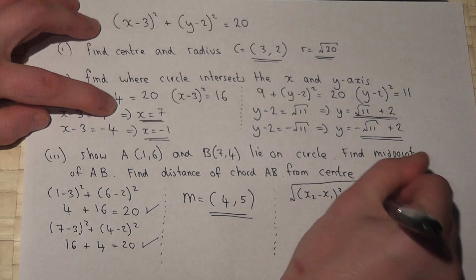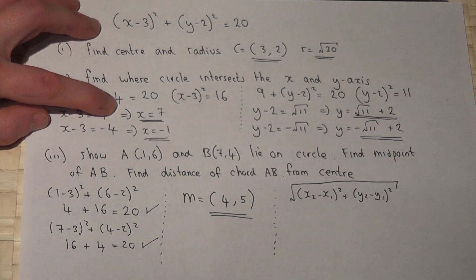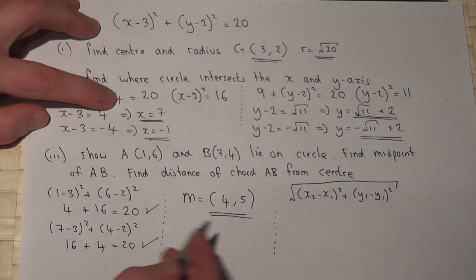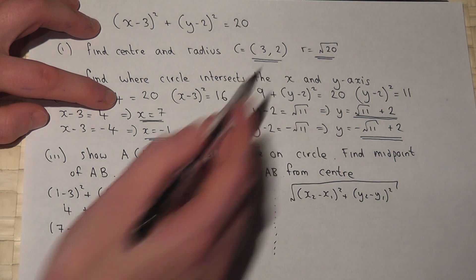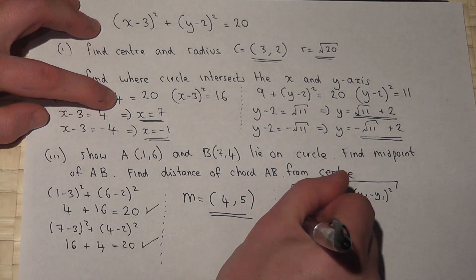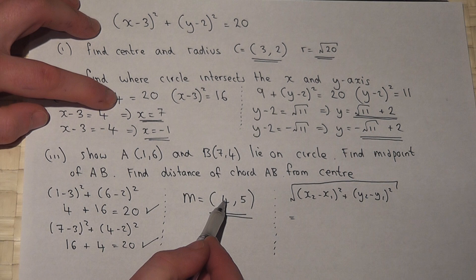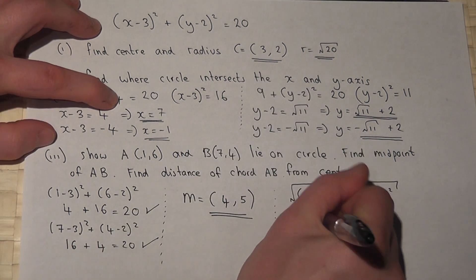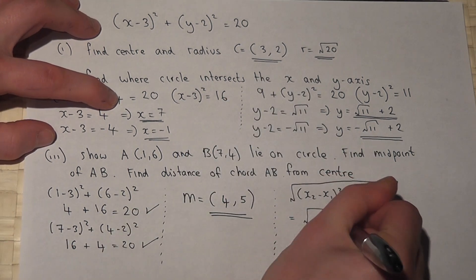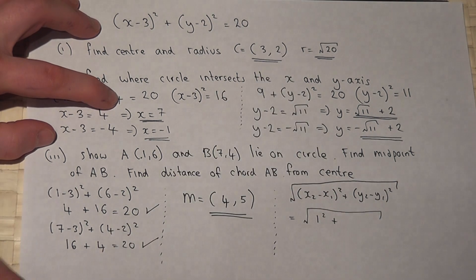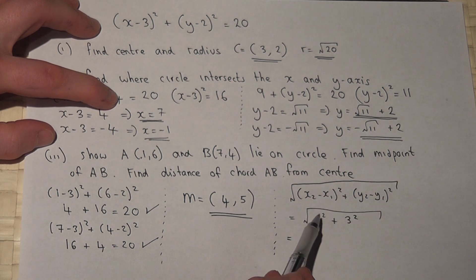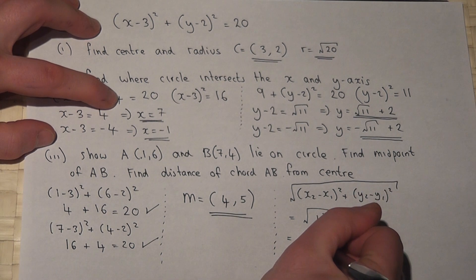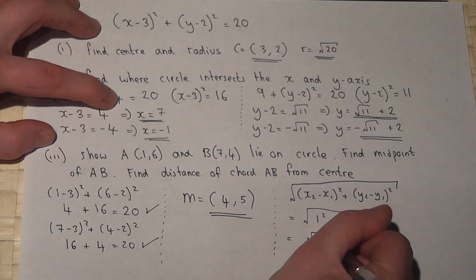The difference between the x-coordinates squared plus the difference between the y-coordinates squared, all square rooted. So x₂-x₁ is 1, so this is just 1² + (5-2 is 3), 3². Now, 1 squared is 1, 3 squared is 9, 1+9 is 10, so the distance is just the square root of 10.